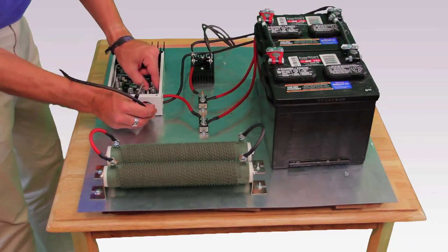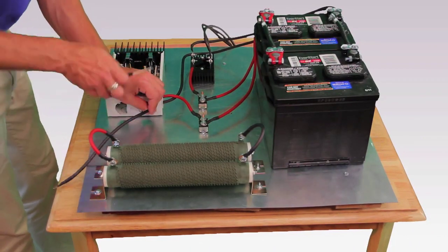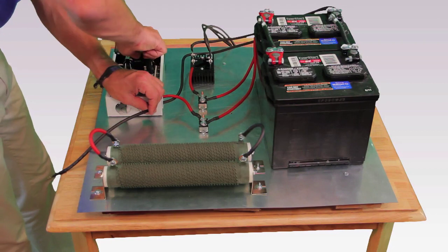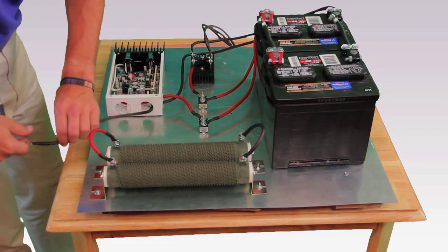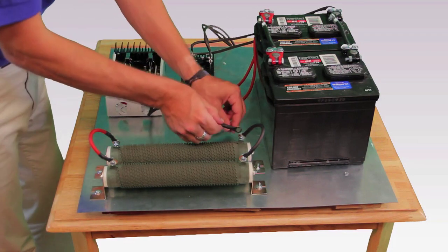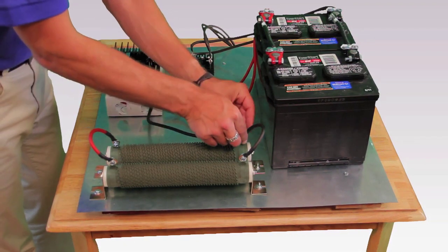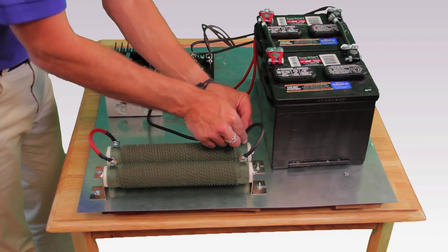Now let's take a black wire and connect it to the remaining terminal in the DC controller labeled common negative and connect the other end to the negative terminal of the dump load. For a wire wound resistor dump load like we're using there's no positive or negative side so you get to choose which end to connect the negative wire to.